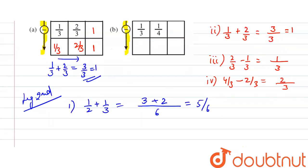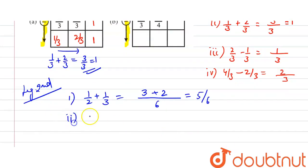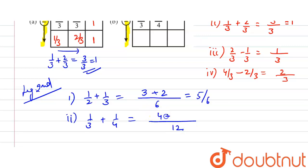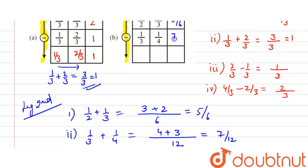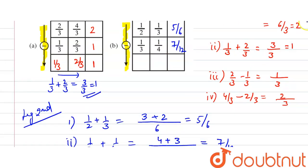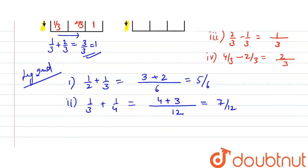Now 1/3 plus 1/4: the LCM of 3 and 4 is 12. Here it is 4 and here it is 3, so 4 plus 3 equals 7/12.